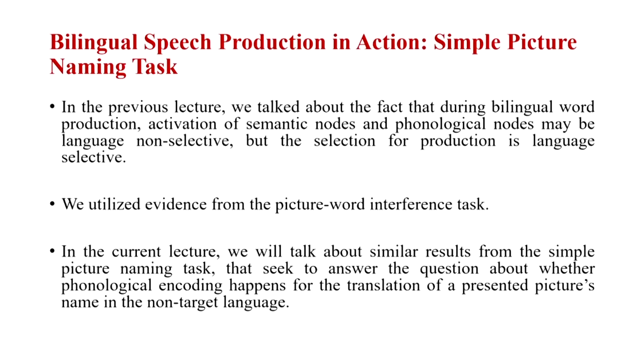So far we have considered evidence from the picture-word interference task. In today's lecture we will talk about similar results from the simple picture naming task where there is no distractor — only a picture is presented. What we are going to investigate is whether phonological encoding actually happens for the translation of a presented picture's name in the non-target language. For example, if I present the picture of the word 'apple', whether the sounds 'seb' and 'bah' are also getting activated because it is a translational equivalent, even though I have been told to name this picture in English.